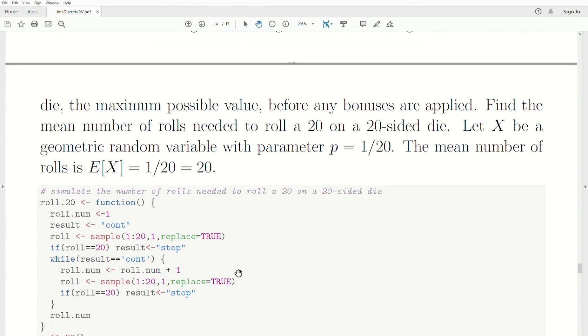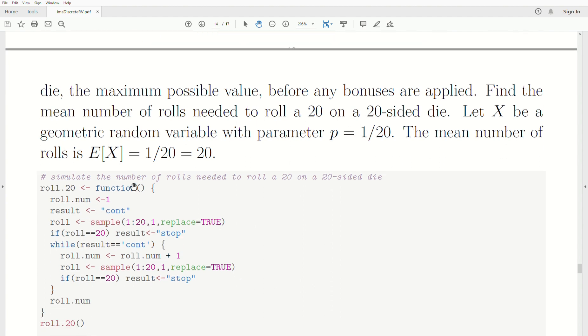Now let's do a simulation in R where we just simulate rolling a 20-sided die. So I create this function called roll.20. We're going to roll a 20-sided die. Oh, and I probably could have made it general for any sided die, but I didn't. So on roll number, it won initially, and the result is continue.